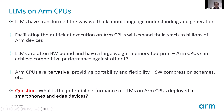Facilitating their efficient execution on ARM CPUs will expand their reach to billions of ARM devices spread all over the world. LLMs are typically supremely huge in size, and as a result they are often very much memory bandwidth bound and have a large weight memory footprint, where ARM CPUs can achieve competitive performance against other IPs. Furthermore, ARM CPUs are omnipresent — they provide portability and flexibility, so a new LLM software compression scheme will work seamlessly on ARM CPUs without much effort.